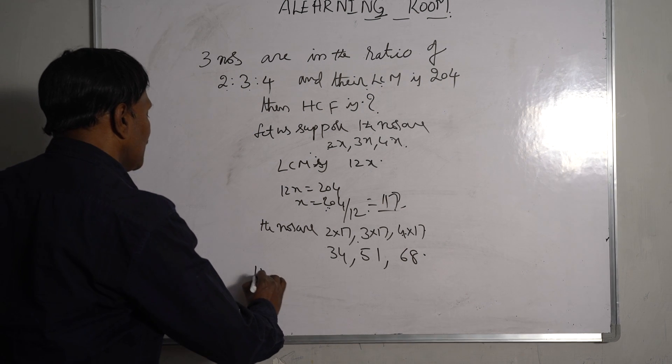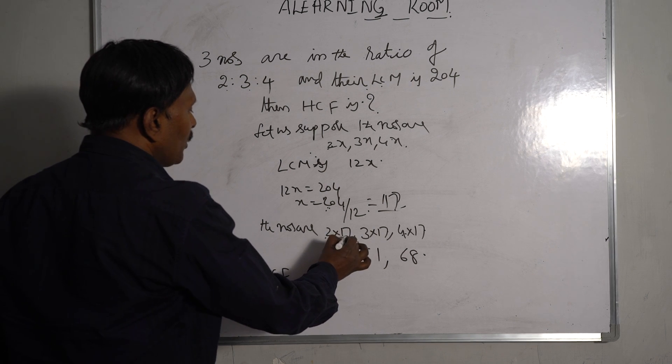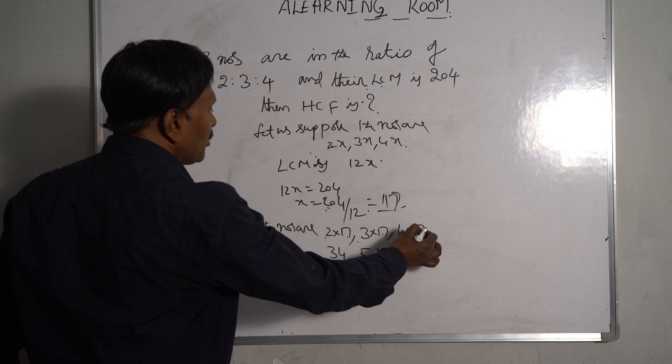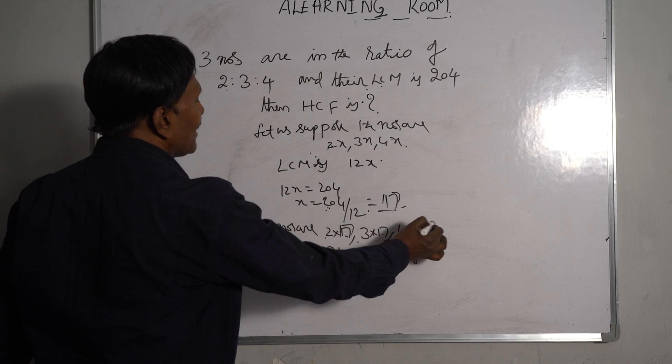We have to find the HCF. It is clearly understood that 2 into 17, 3 into 17, 4 into 17. According to the definition, the HCF is clearly 17.